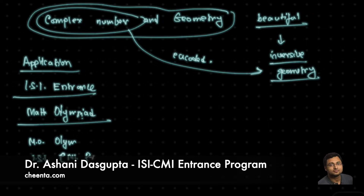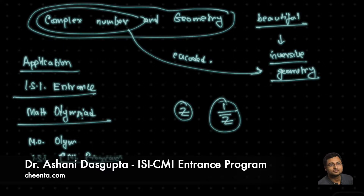What is this problem? To understand the problem, I have to first tell you the relationship between the complex numbers Z and 1 over Z̄. These are two very interesting complex numbers. They have a very beautiful relationship in that they are inverses of each other.